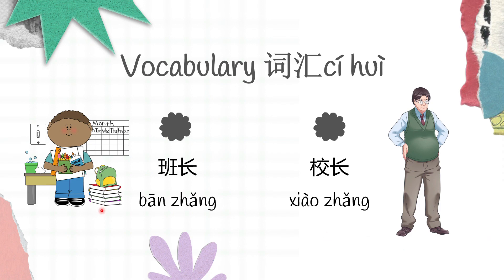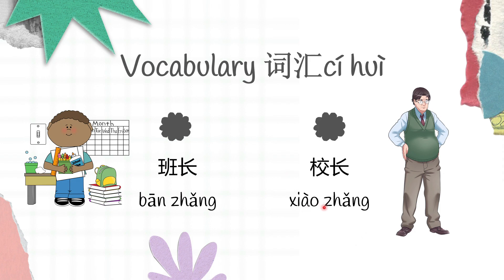In the first slide we have 班长 and 校长. The meaning of 班长 is class monitor and the meaning of 校长 is principal. 班长 is class monitor, 校长 is principal. Let's read together: 班长, 班长, 班长. 校长, 校长, 校长.